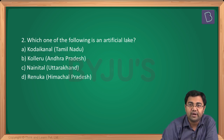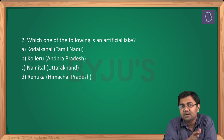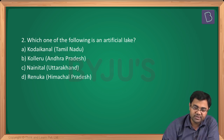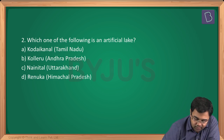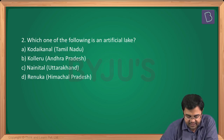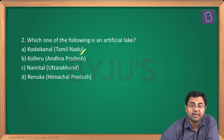Question number two — we are discussing Set B. Question number two says: which of the following is an artificial lake? The answer to this is Kodaikanal.